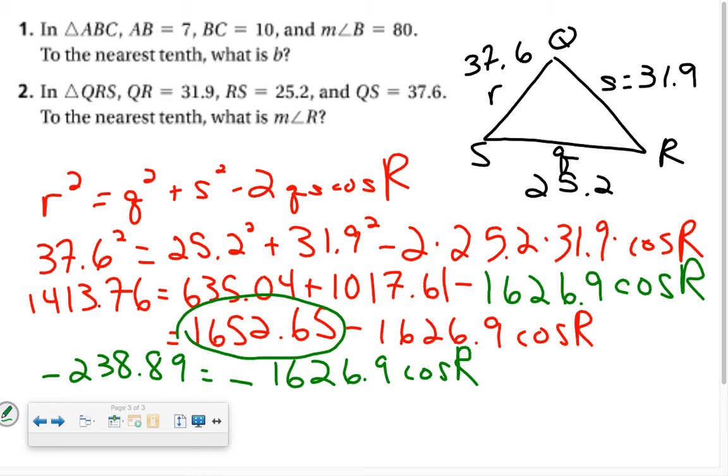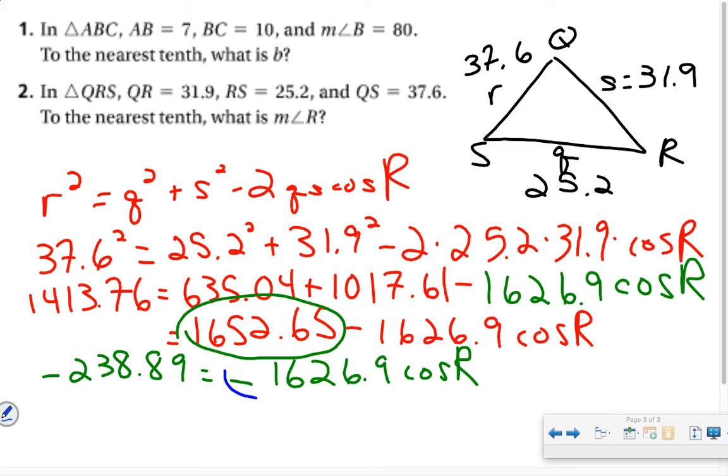Next step, in order to get the angle by itself, is to divide both sides by this number. So when I do that, I have negative 238.89 divided by negative 1626.9. And now I have that the cosine of R equals 0.1468 approximately.